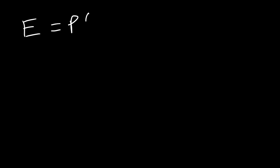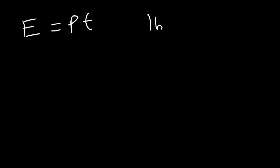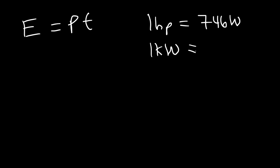If you need to calculate the energy, energy is power multiplied by time. So if you have the power in watts, multiply it by the time in seconds. Keep in mind, one horsepower is 746 watts, and one kilowatt is 1,000 watts.